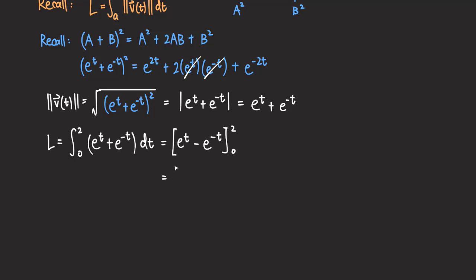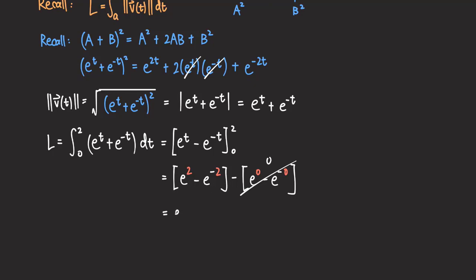Plugging in t = 2, we get e² − e^(−2). Plugging in t = 0, we get e^0 − e^0, which is 1 − 1 = 0. So the lower bound contribution is zero, and we are left with e² − e^(−2) as the length of the curve.